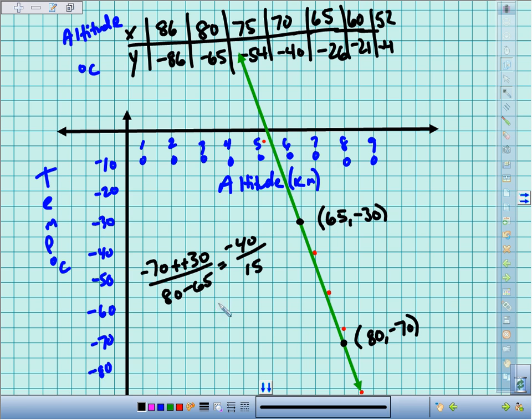Negative 40 divided by 15. What's that going to be? 15 goes into 40, it's going to be negative because you have negative divided by positive. 15 goes into 40 twice, that'll be 30, so you have 10/30ths remainder. We're looking at about negative 2.33 is our slope. So every time we raise one kilometer in altitude, we can estimate the temperature will drop 2.33 degrees Celsius.